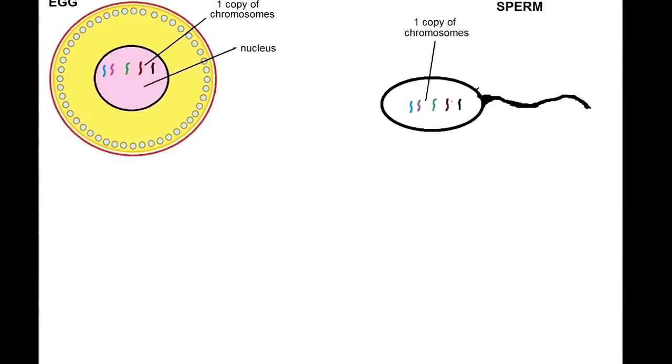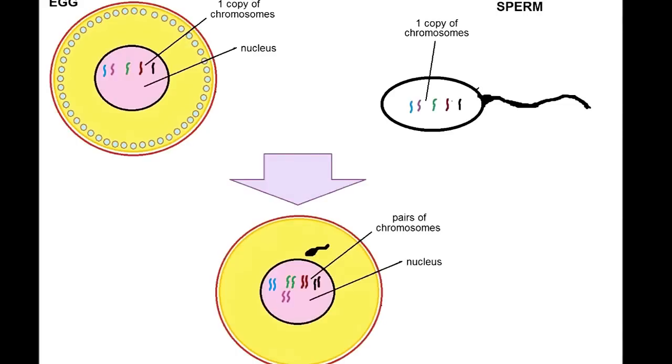After meeting haploid sperm, which also has only one copy of every chromosome, the resulting zygote is diploid and has a pair of every chromosome, one from a female and one from a male.